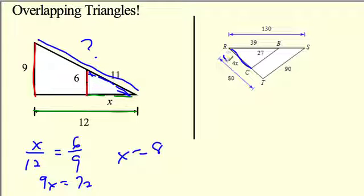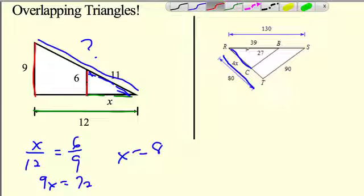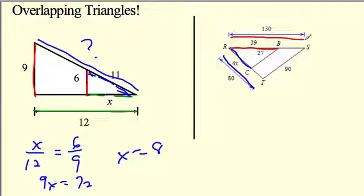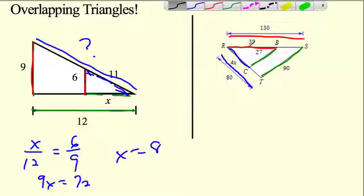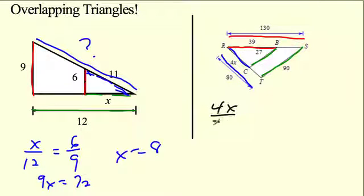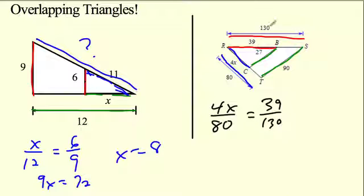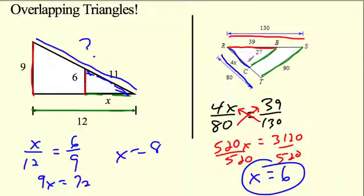Another overlapping triangle. RC in the small triangle matches RT in the big triangle; RB matches the whole side; the bottom matches the whole bottom. Set up: 4x is to 80 as 39 is to 130. Solve for x — x equals 6. Plug in: 4 times 6 is 24. That seems very reasonable as the small side. I'll end with a little Halloween clip. Hope you do well on the mastery check — peace out!